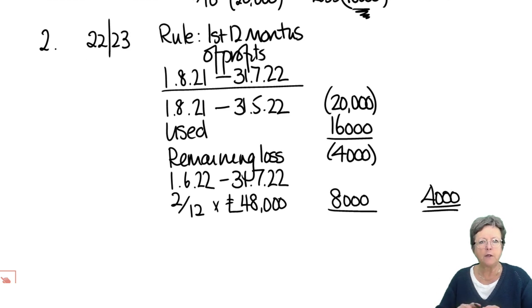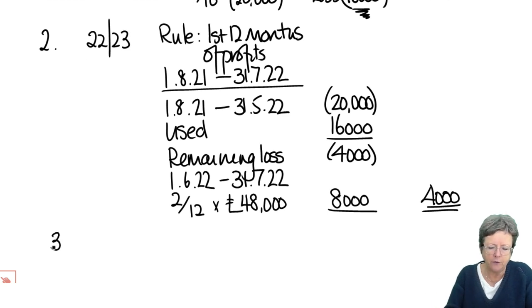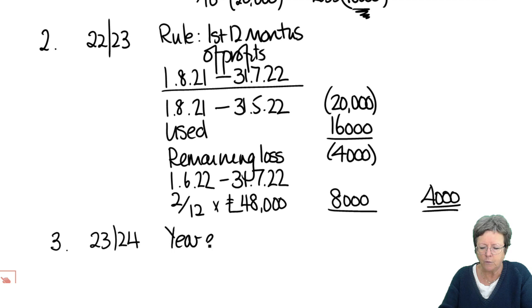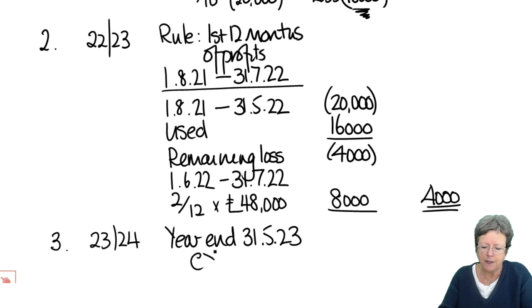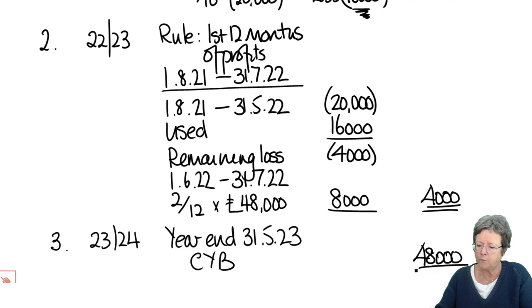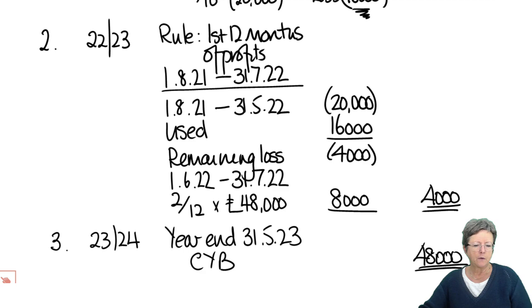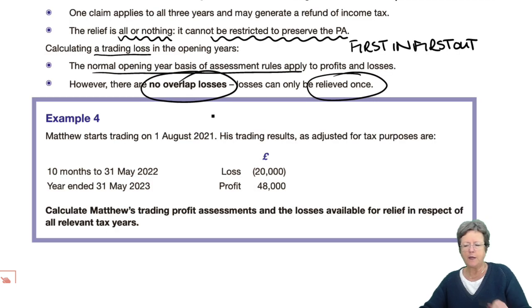We are not yet on a current year basis. So for Year 3, 23-24: is there a set of accounts that ends in this period? Yes — the year-ended 31st of May 2023 accounts. So we're now on a current year basis and that £48,000 will be assessed. There is your answer to Example 4.